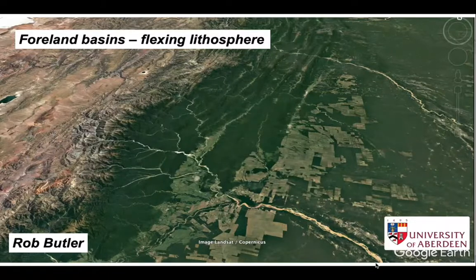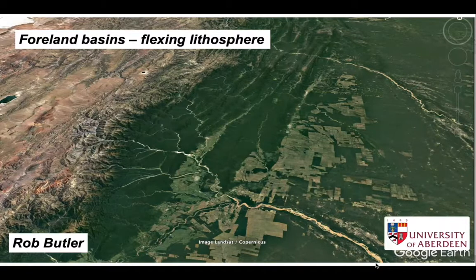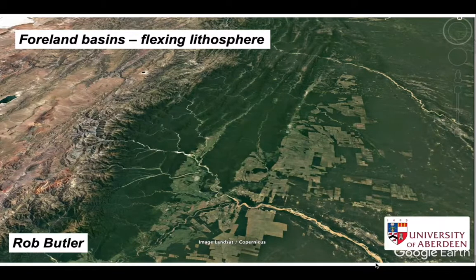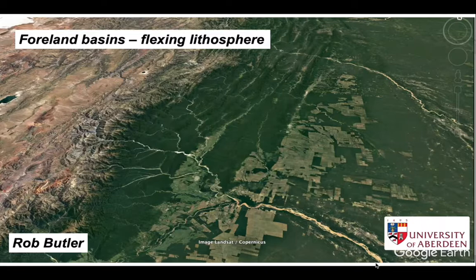The margins of mountain belts are important places for sediment accumulation. We call these sites foreland basins and they form, or are believed to form, by the flexing of the lithosphere adjacent to the mountain ranges.